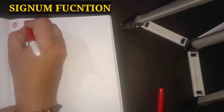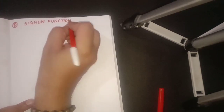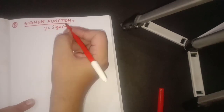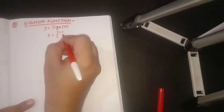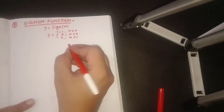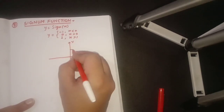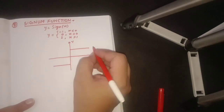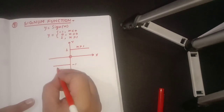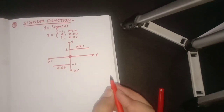The next type is the signum function. In short form it is written as y = sgn(x), and it has only three values: −1, 0, and +1. It is −1 when x < 0, it is 0 when x = 0, and it is 1 when x > 0. So its graph assigns only these three values: 1 for positive x, 0 at the origin, and −1 for negative x. All these types of functions are important for competitive examinations.